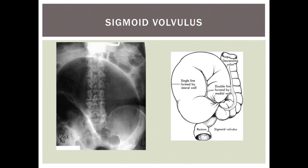Sigmoid volvulus tends to occur in the elderly population and results from a twist in the sigmoid colon. As a result, you can see an inverted U-shaped appearance, which is known as the coffee bean sign, with the apex pointing towards the right upper quadrant. Clinically the abdomen will be massively distended, and as a consequence you often get a poor quality film in which you do not see the coffee bean sign so clearly. Treatment is passing a flatus tube per rectum beyond the twist point to decompress the bowel above and thus allow the twist to untwist.